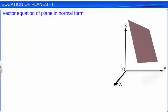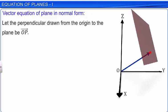Consider a plane in a three-dimensional coordinate system as shown. Draw a perpendicular from the origin to the plane. Let this perpendicular meet the plane at point P and be represented by vector OP. Let the perpendicular distance of the plane from the origin, or the magnitude of vector OP, be d. Note that the value of d cannot be zero — that is, the plane does not pass through the origin.